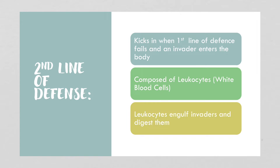The second line of defense activates when an invader successfully enters the body. It is composed of leukocytes, or white blood cells, which engulf invaders and digest them, often dying in the process. The pus you see in a pimple or infected cut is actually dead white blood cells that sacrificed themselves to keep you well.